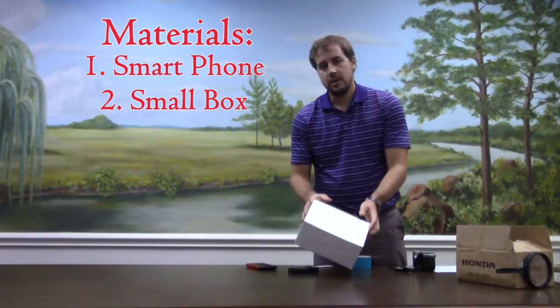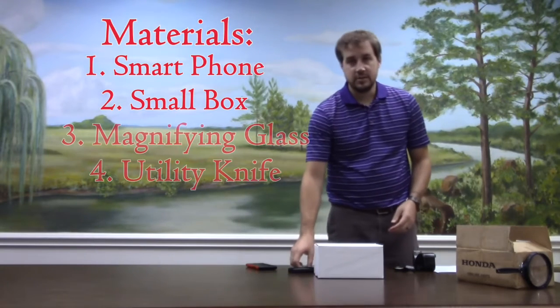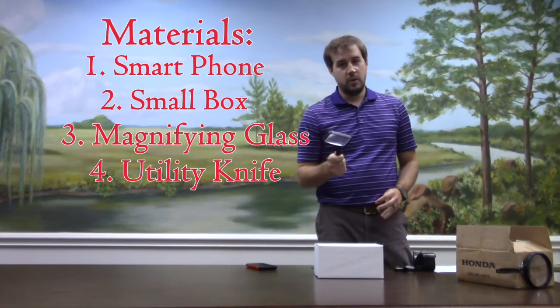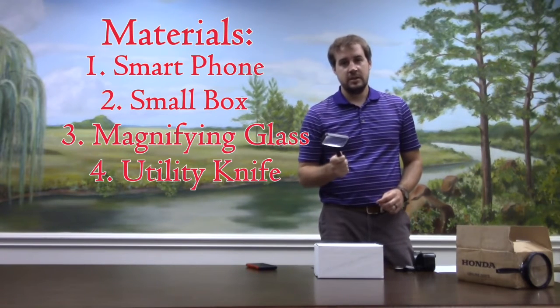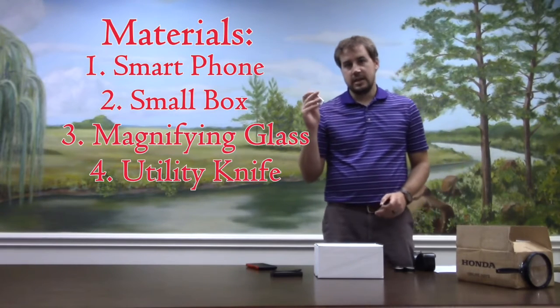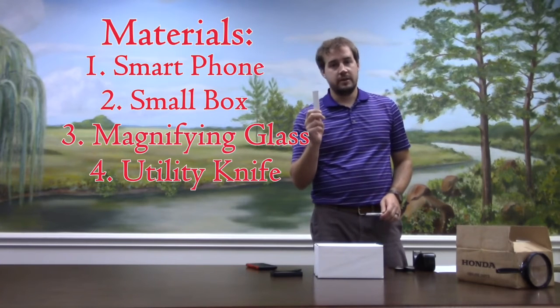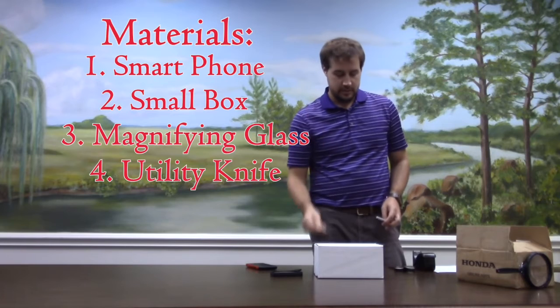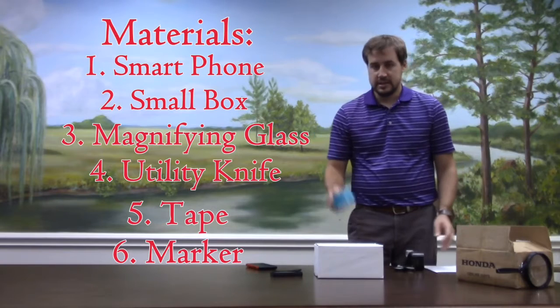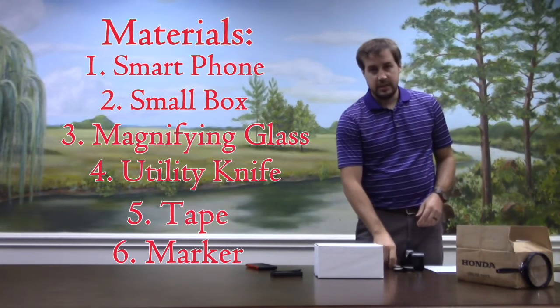You need, obviously, a magnifying glass. Preferably two. If you only have one, it gets really hard to focus. But if you have two, that can help you. You'll need a utility knife to cut the box. Please make sure you're working on this with your parents. Just again, reminder. You'll need some tape. You probably want some clear tape and something like duct tape. But you don't have to. And you'll need a marker.